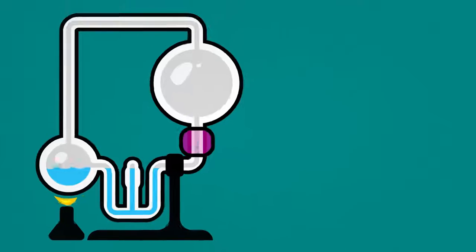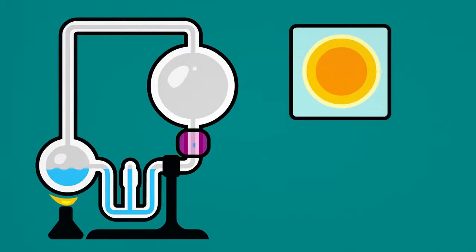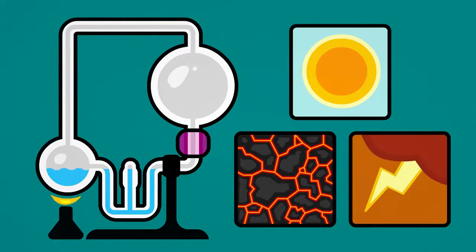The ancient earth would have had many sources of energy, sunlight, geothermal heat, and even thunderstorms. So they added sparks to the atmosphere to simulate lightning.